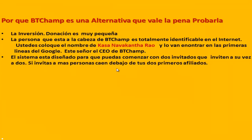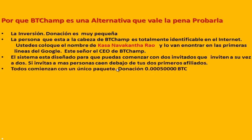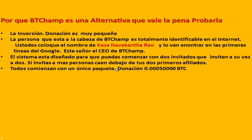El sistema está diseñado para que tú puedas comenzar con dos invitados y que estas personas inviten a su vez a dos personas. Lo importante es que estas dos personas inviten a dos personas, y si estas personas hacen eso, no necesitarías invitar a más personas. Si tú invitas a más personas, lo que estás haciendo es ayudar a estas dos personas que has invitado a llenar los diferentes niveles. Todo comienza con un único paquete: 0.005 BTC o los 50.000 satoshis. Todos comenzamos con ese paquete; no hay paquetes más grandes ni más chicos.